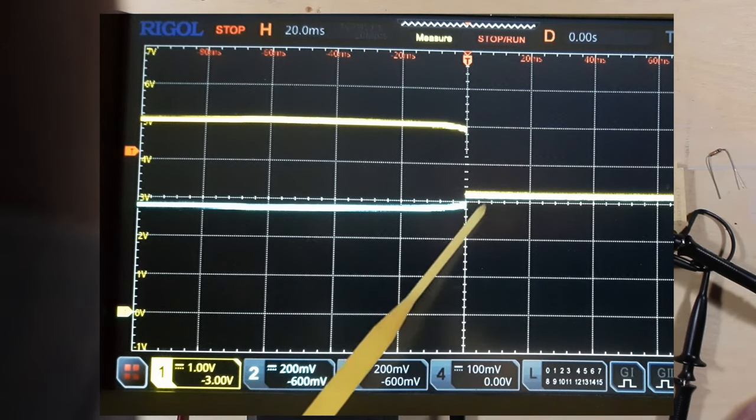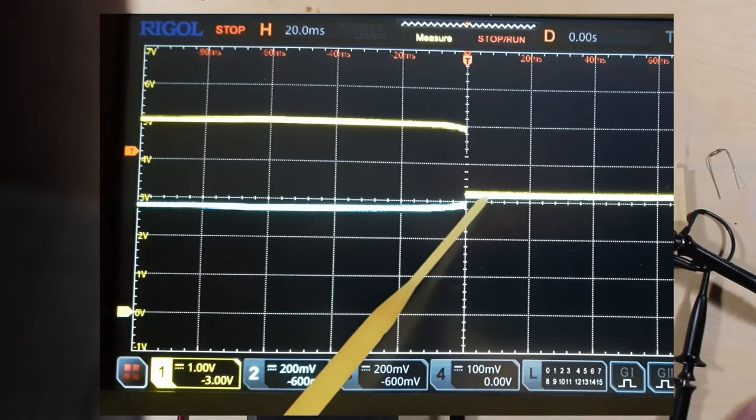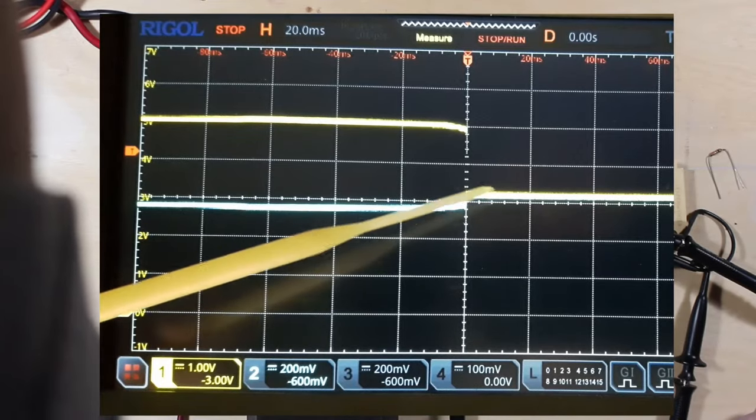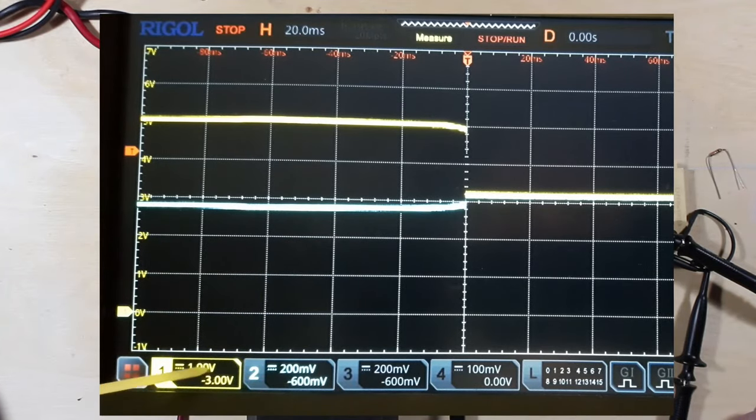And just coincidentally, you can just barely see the blue trace underneath the yellow one right here. They just happen to be coincidentally in the same spot here, even though their scales are different.